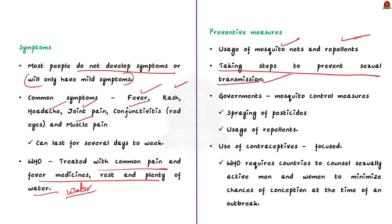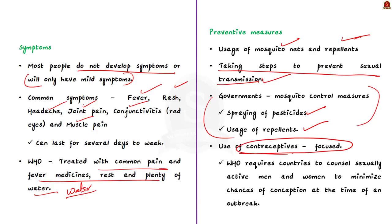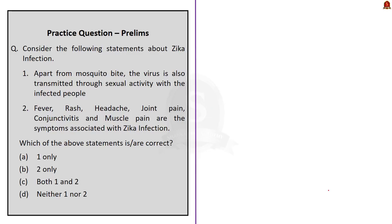WHO requires countries to counsel sexually active men and women on the matter to minimize the chances of conception at the time of an outbreak. This is all about the Zika virus, which is very important from the preliminary point of view.